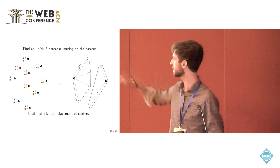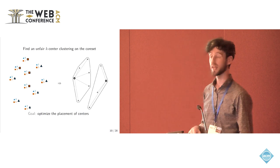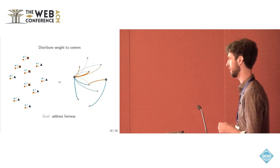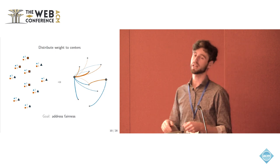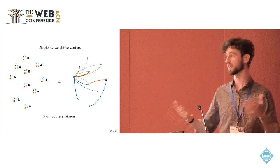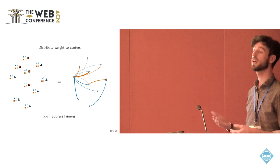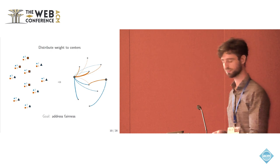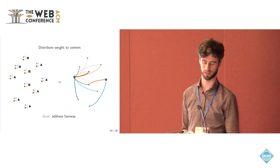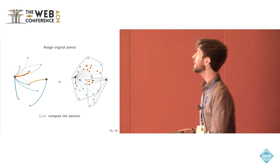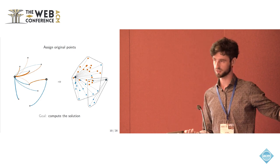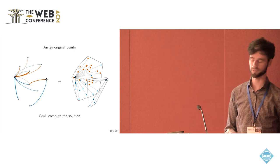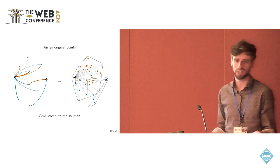And now in this case, it will be the two larger circles. Now that we found the position of the centers, we bring back the information of the weights and we try to distribute the weights of the core set between the two centers in this case so that fairness is ensured. This is where the linear program runs. Once we have distributed the weight among core set points, then we go back to the original input and we assign the original input points to the cluster centers, and then we find the final solution.